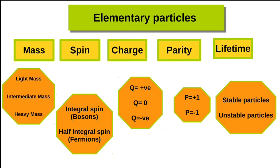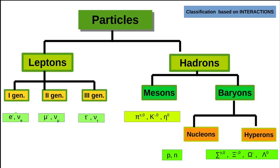Particles can also be classified by charge: positively charged, neutral, or negatively charged. Another parameter is parity, which refers to space reversal — particles can have parity of plus one or minus one. Finally, there is lifetime: some particles are stable and do not decay or have very large lifetimes, while others are unstable and will decay.